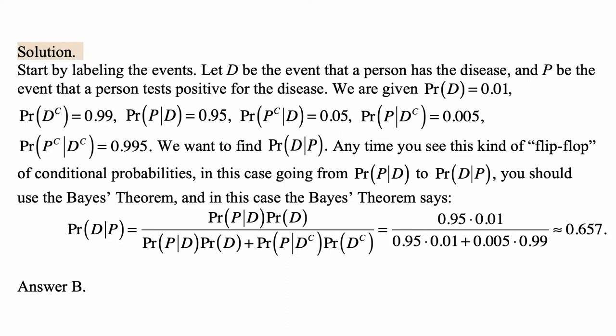Anytime you see this kind of flip-flop of conditional probabilities — in this case going from P(P given D) to the one we're looking for, P(D given P), reversing the roles of conditional versus what we're calculating — you should use Bayes' theorem. In this case, Bayes' theorem says P(D given P) equals P(P given D) times P(D) divided by the same type of expression for all possible pieces of the partition. The partition of the probability space is D and D complement, so the denominator is P(P given D) times P(D) plus P(P given D complement) times P(D complement).